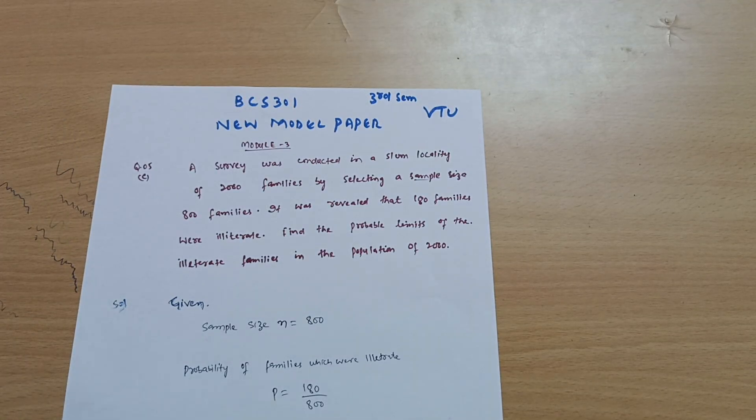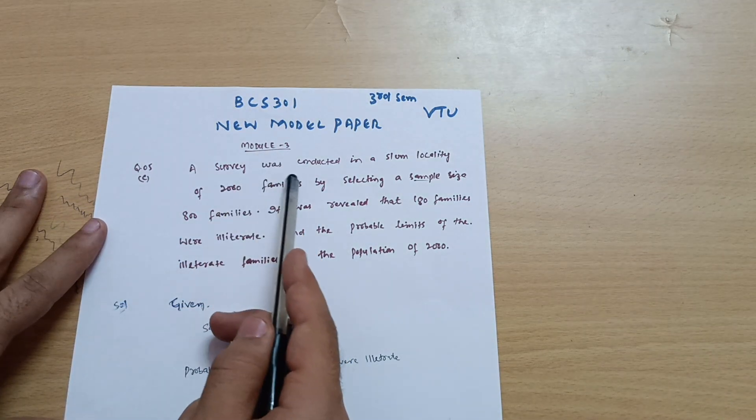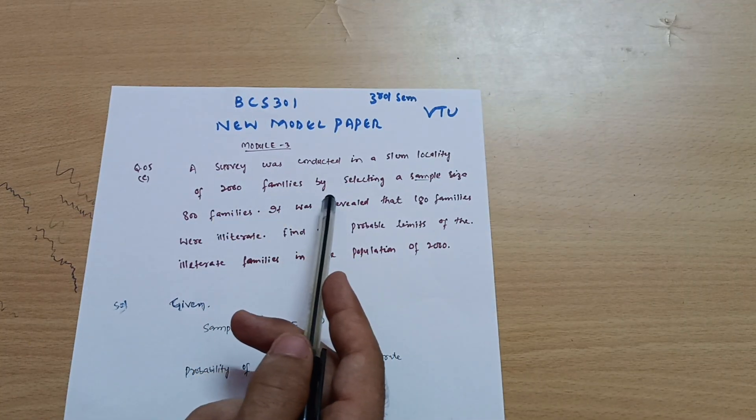Dear friends, welcome back. We are discussing the model question paper today. I will be explaining question number 5C from the model paper. A survey was conducted in a slum locality of 2000 families by selecting a sample size of 800 families.